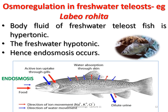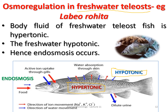In freshwater bony fish (teleosts), the body fluid is hypertonic while the freshwater is hypotonic. So endosmosis occurs — water moves from outside into the body. As more and more water enters inside, there will be excess water and the volume of body fluid increases. This excess water must be removed.